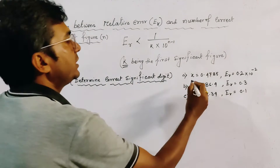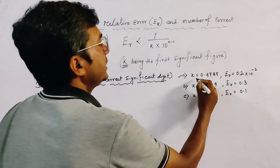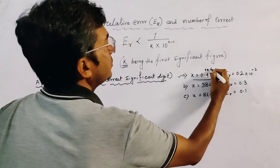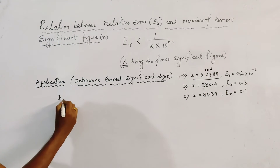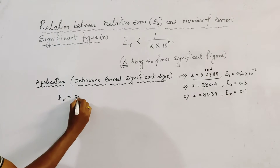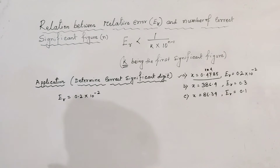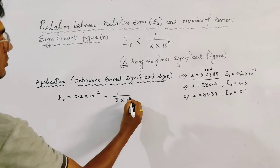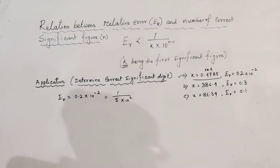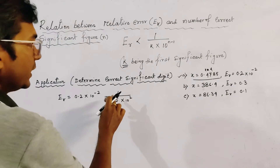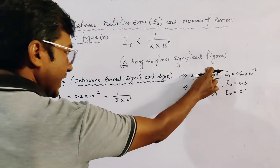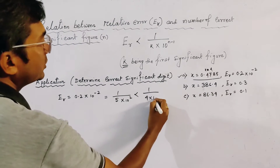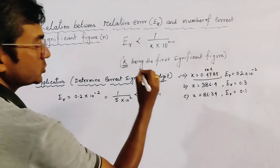In the first example, x is given, so k is the first significant figure, which is equal to 4. And er is given by 0.2 times 10 to the power minus 2, which equals 1 divided by 5 times 10 to the power 2. If we put k=4 in place of 5, we can write this as 1 divided by 4 times 10 to the power 2, meaning 3 minus 1.